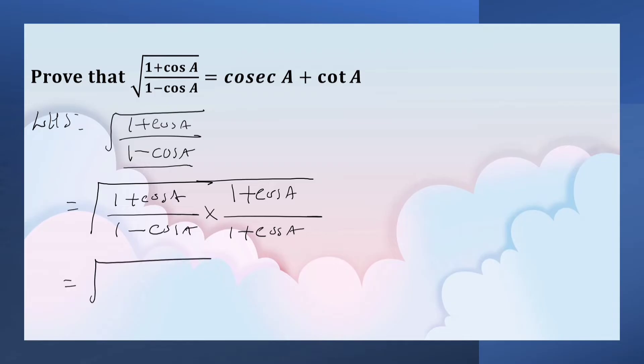That is equal to, in the denominator it is in the form of a plus b into a minus b which is equal to a square minus b square. In the numerator, 1 plus cos a the whole square because it appears 2 times.